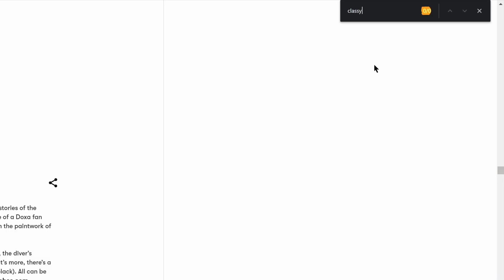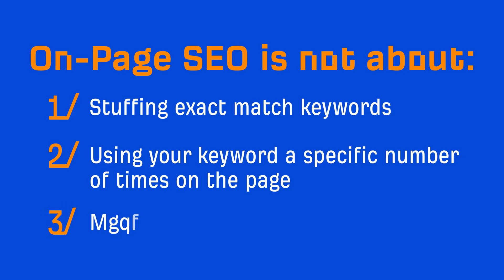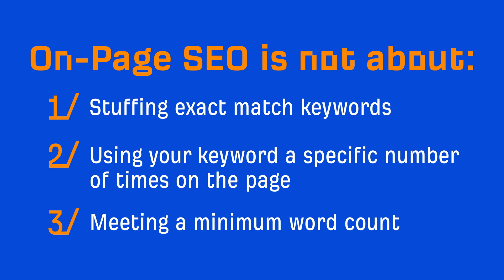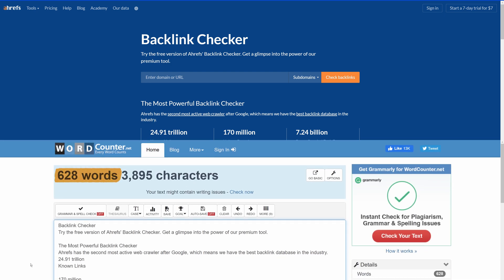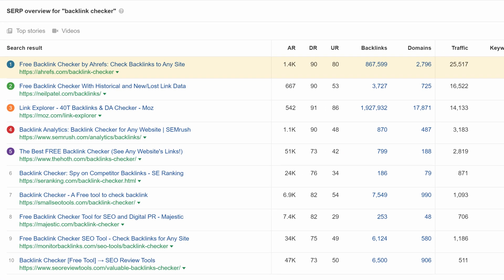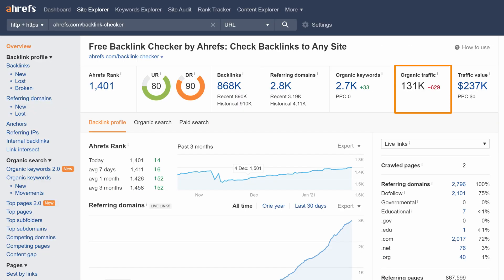The third point is that on-page SEO isn't about meeting a minimum word count. Some studies have shown that the average content length of the top 10 results is over 2,000 words. As a result, many SEOs have recommended that you create pages that are at least that length. But that isn't exactly sound advice. For example, our backlink checker is 628 words, yet we rank number 1 for our target keyword,